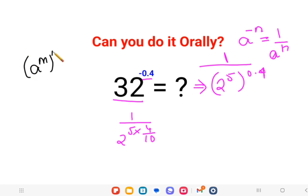So using that logic, I directly multiplied the indices 5 and 0.4. And again, 0.4 can be written in fraction form which is 4 upon 10. So now this is cancelling - 5 and 10.